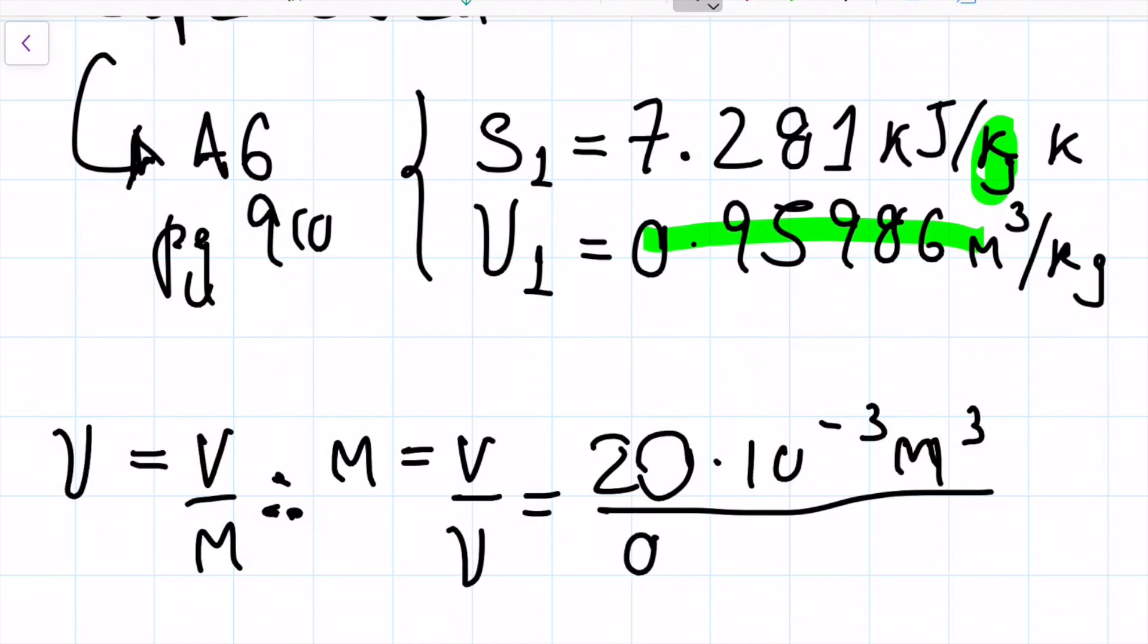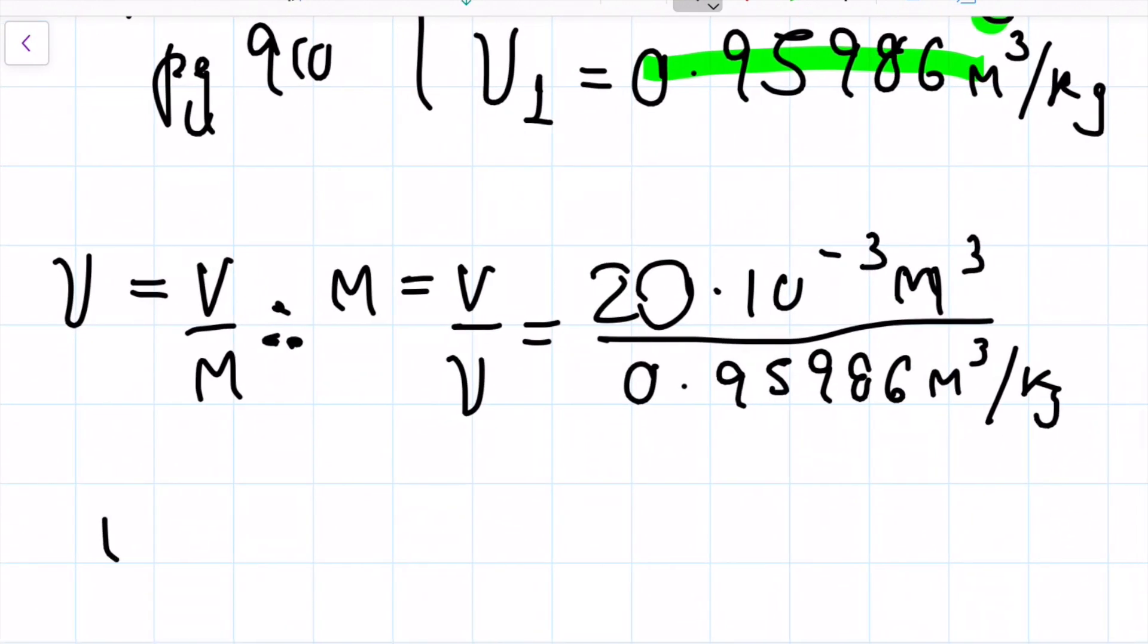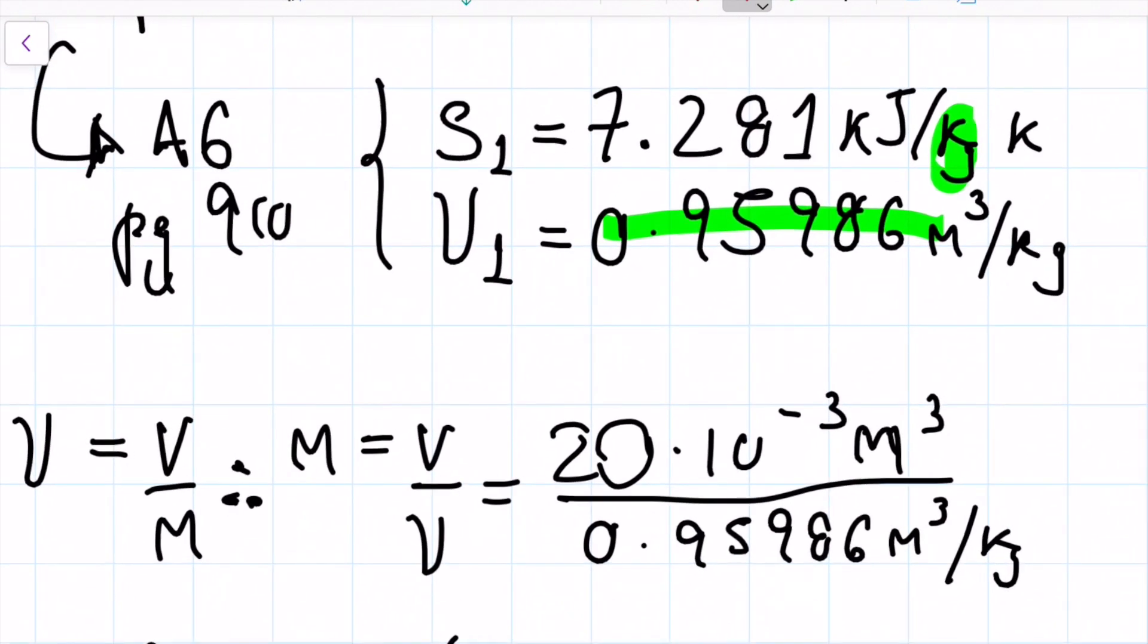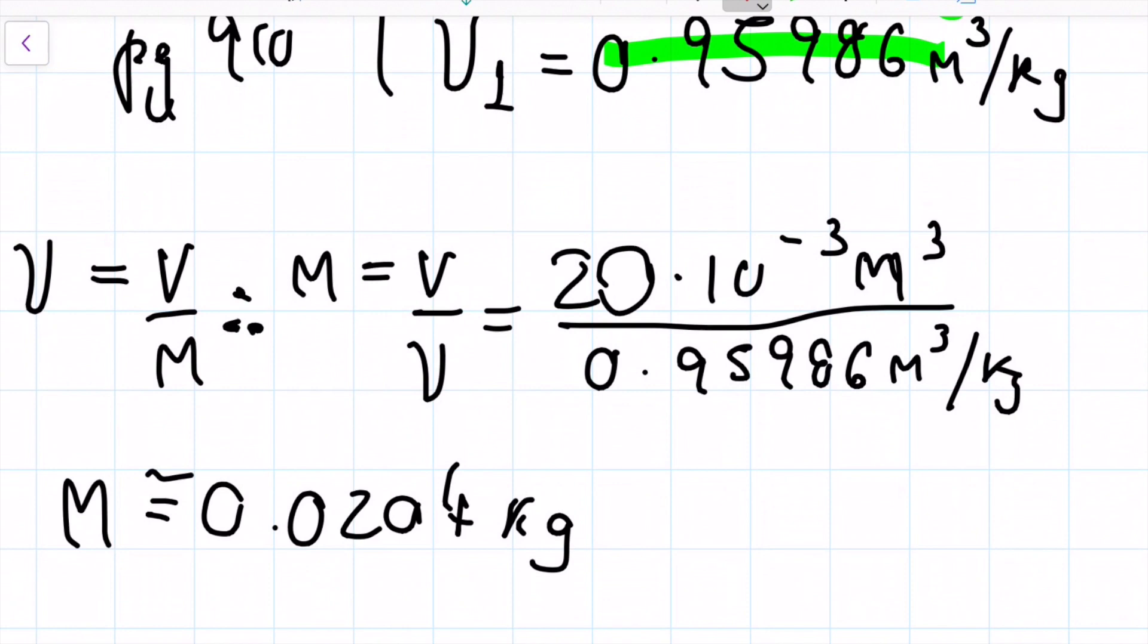And then we're going to divide by 0.95986, and we're going to have an answer in kilograms. That turns out to be about 0.0204 kilograms. And I could have converted that into grams, it would make more sense, but since I'm going to multiply by the kilograms eventually, this guy here, I'm just going to leave in kilograms for now.